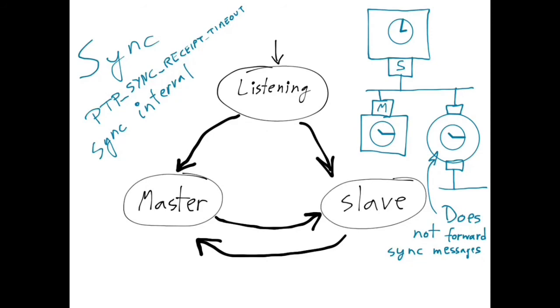You might ask yourself why this transition is necessary if a port can only be in the slave state if it had detected another master. Let's assume that this port here is also in the slave state.